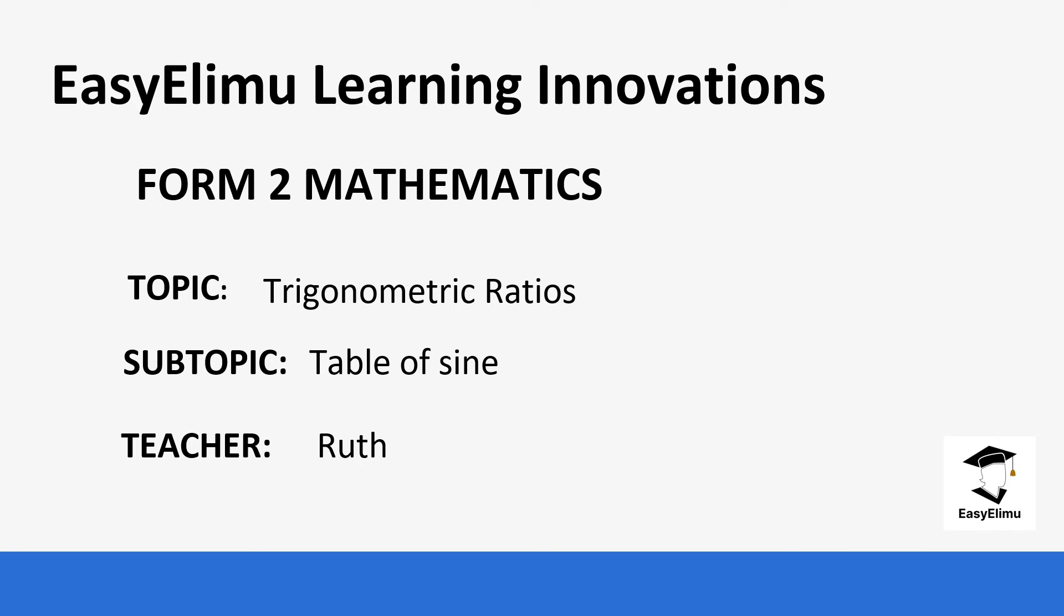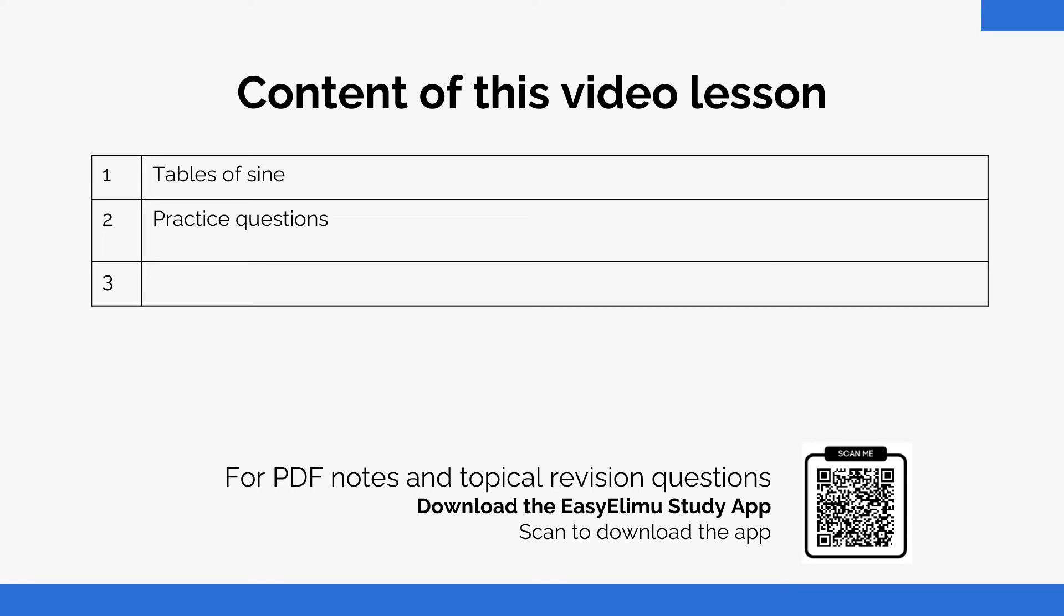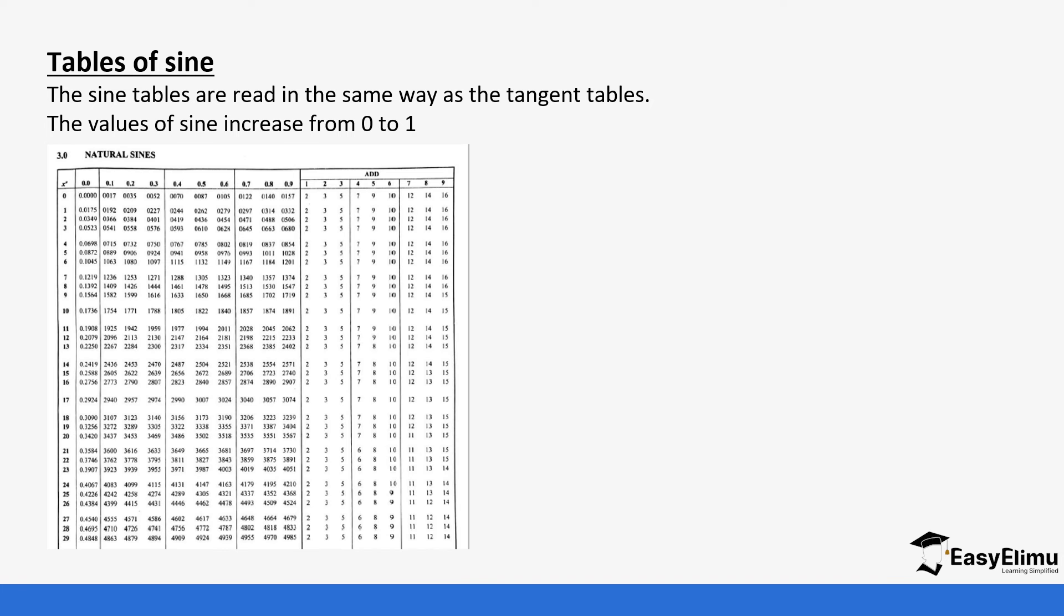Today we are going to be looking at the table of sine. Previously we had looked at the table of tangent. The tables of sine are usually read in the same way as the tables of tangent and their values usually increase from zero to one.